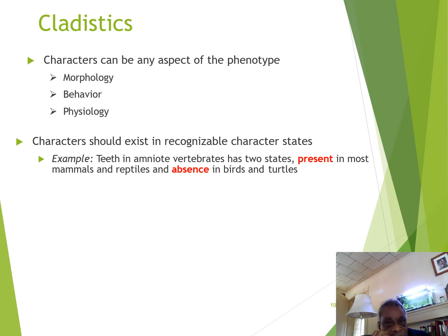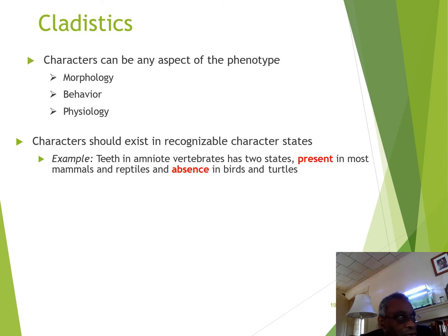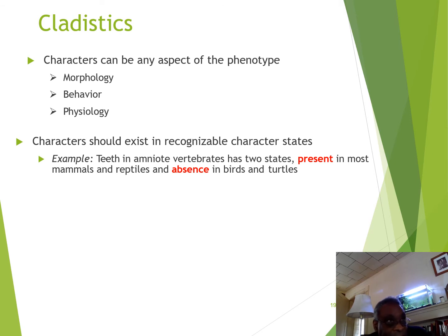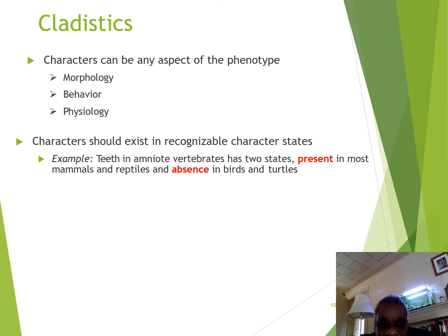Pretty much any aspect of the phenotype may be used as a character — morphology, behavior, or physiology. When we choose a character, we should make sure it exists in recognizable absence-presence states. For instance, teeth in amniote vertebrates have two states: teeth are present in most mammals and reptiles and absent in birds and turtles. That represents a recognizable character state we can use to group mammals and reptiles into one clade and birds and turtles into another.